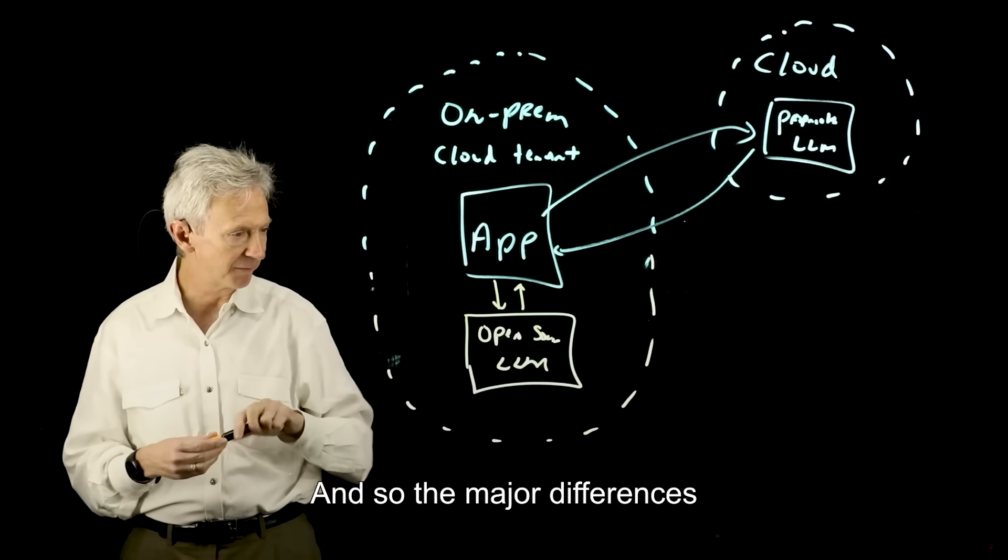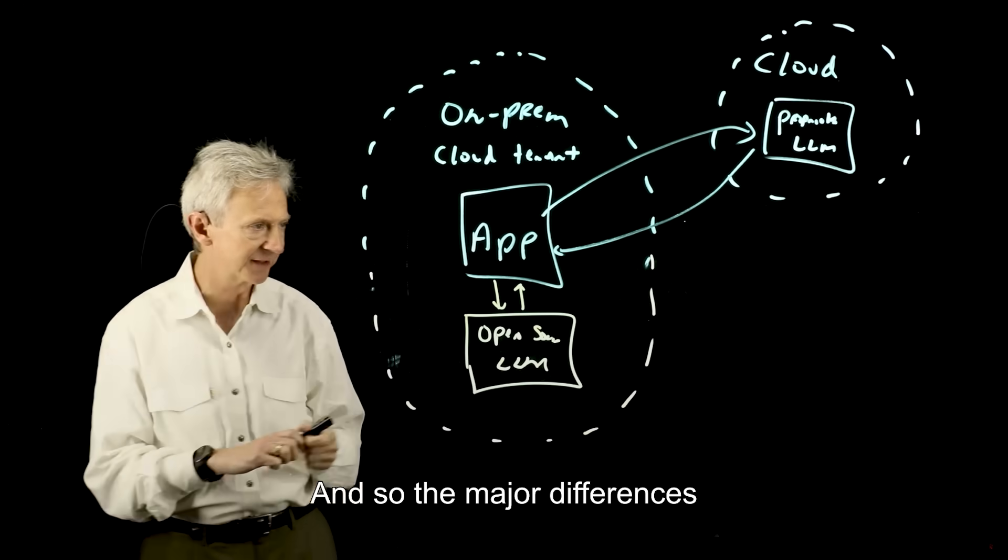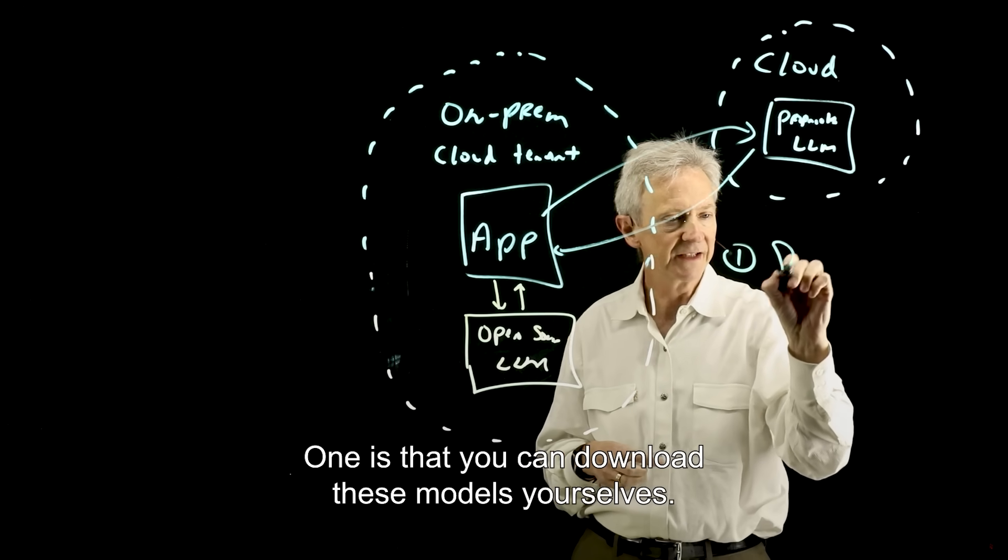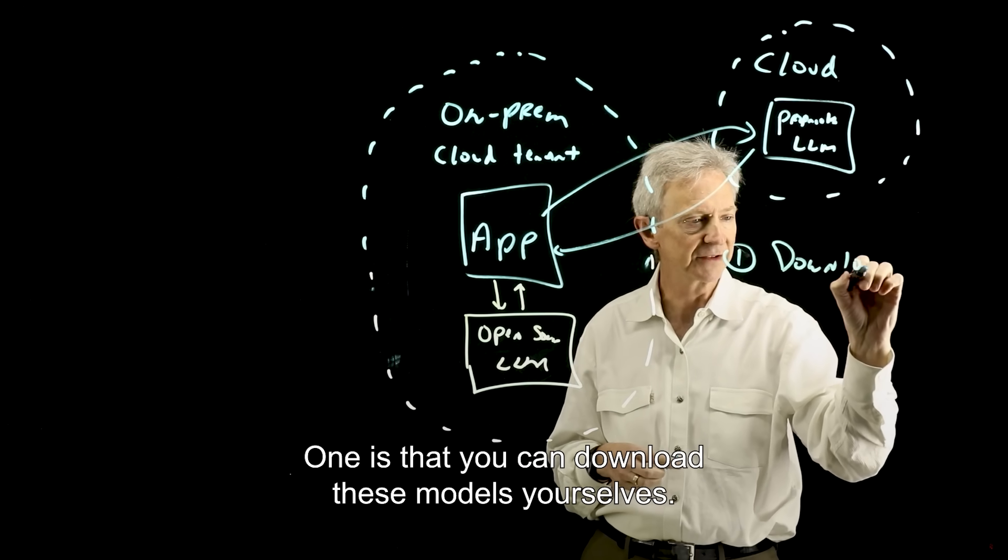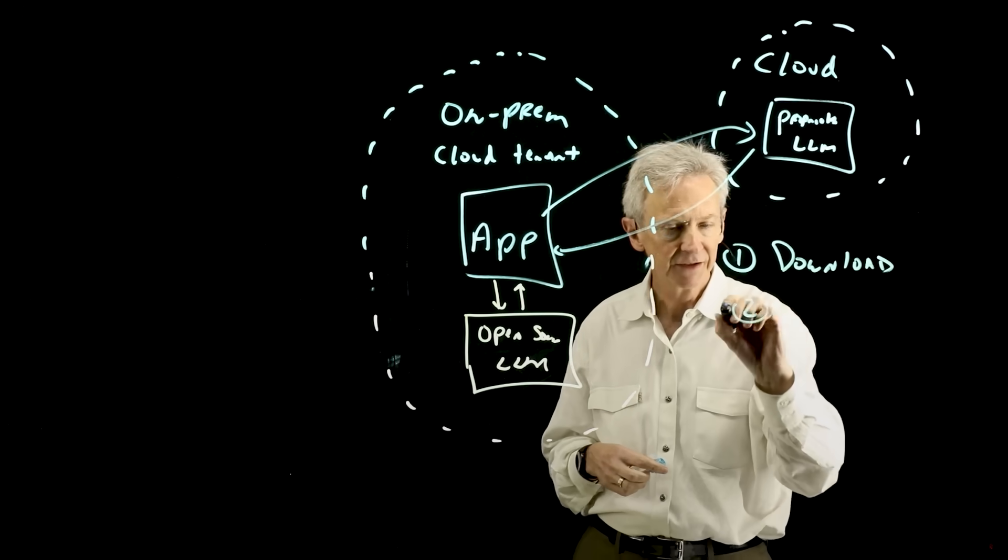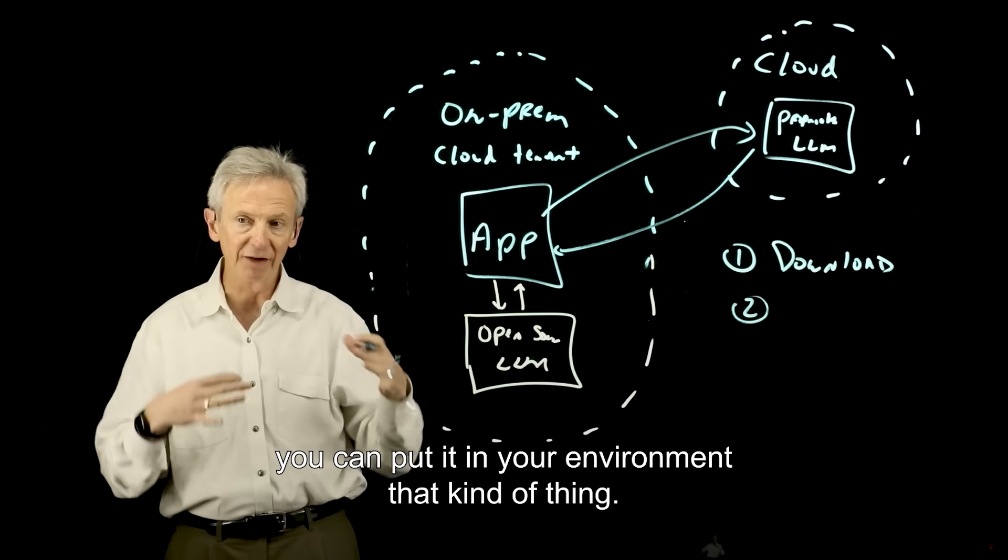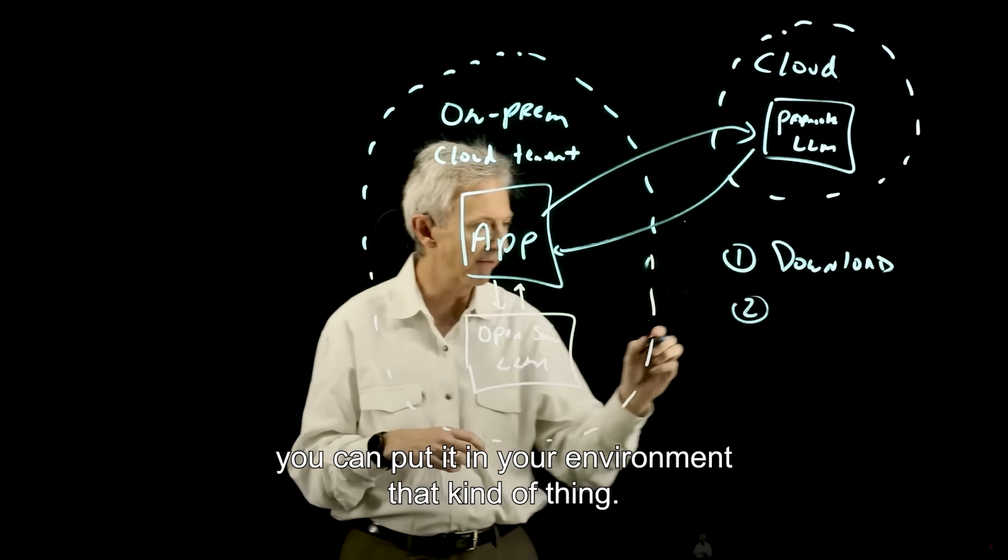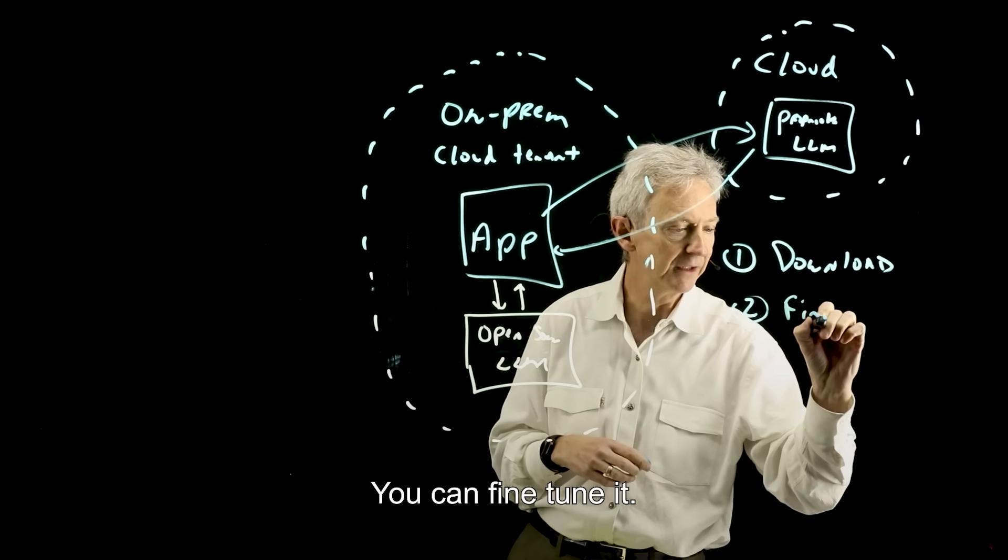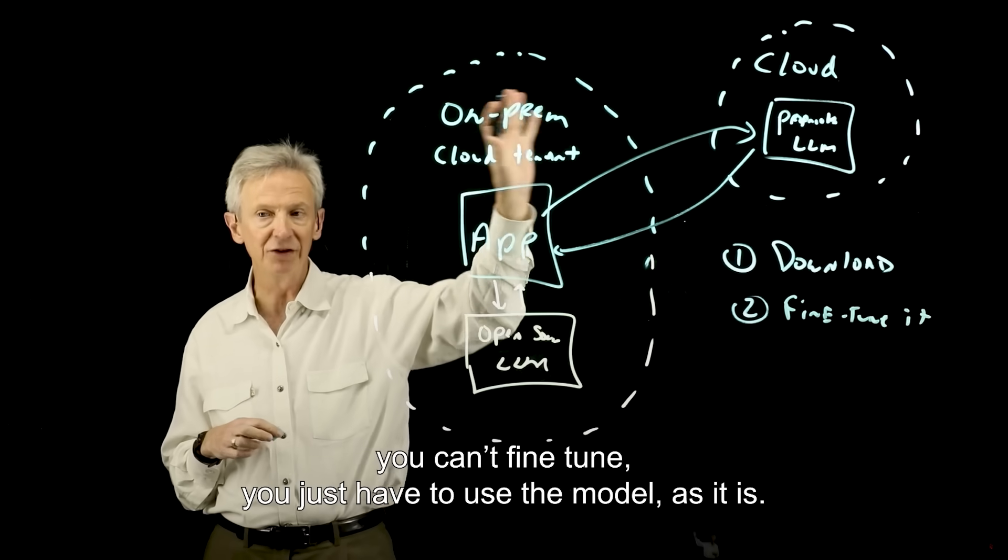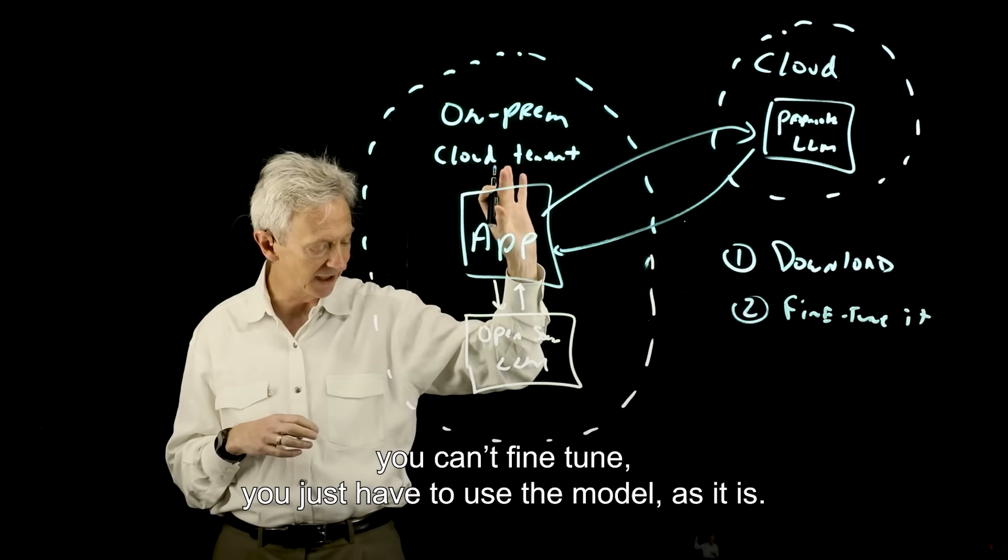And so the major differences, I would say, let me do this over here, are one is that you can download these models yourself. So you can download the code, you can inspect the weights, you can put it in your environment, that kind of thing. You can fine-tune it. So some of these proprietary models you can't fine-tune, you just have to use the model as it is.